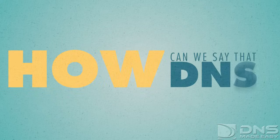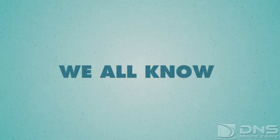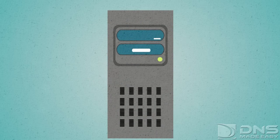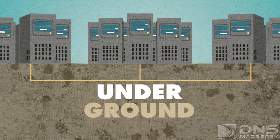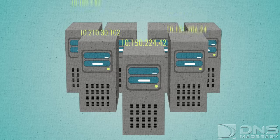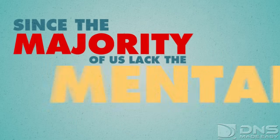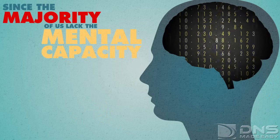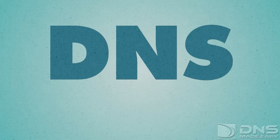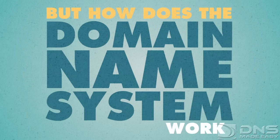How can we say that DNS is this important? We all know, or should know, that the computers that make up the internet are set up in large networks that communicate with each other via underground or underwater wires, and are identified using strings of numbers known as IP addresses. Since the majority of us lack the mental capacity to sort through and retain hundreds of numerical series, DNS is used to translate an actual name into these numbers.